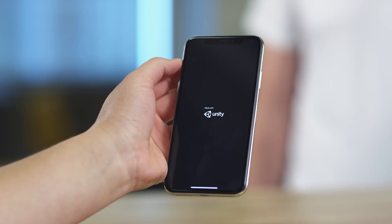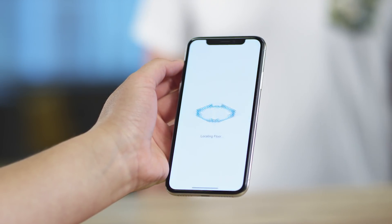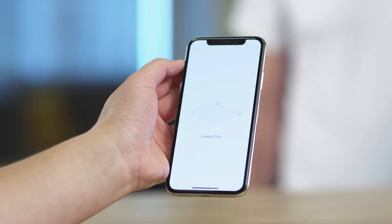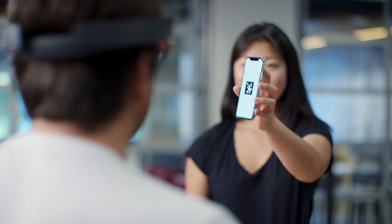The mobile device will start looking for surfaces in your room. Once it anchors itself, it will display a code in order to join and align with a HoloLens.